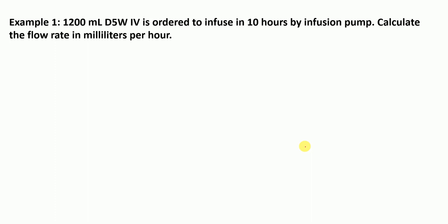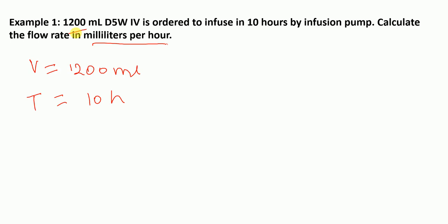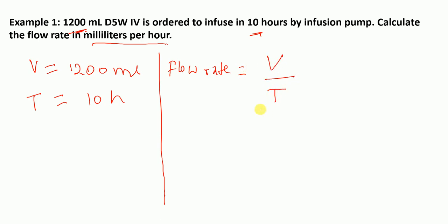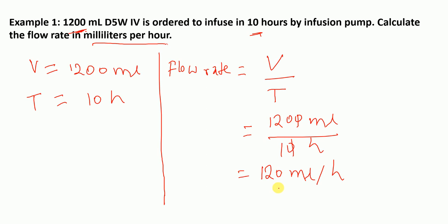The next question: 1200 ml of D5W IV is ordered to infuse in 10 hours by infusion pump — calculate the flow rate in milliliters per hour. Volume V is 1200 ml and time T is 10 hours. Using the formula, flow rate equals volume divided by time: 1200 ml divided by 10 hours. The zeros cancel, giving 120 ml per hour. So this is our flow rate.